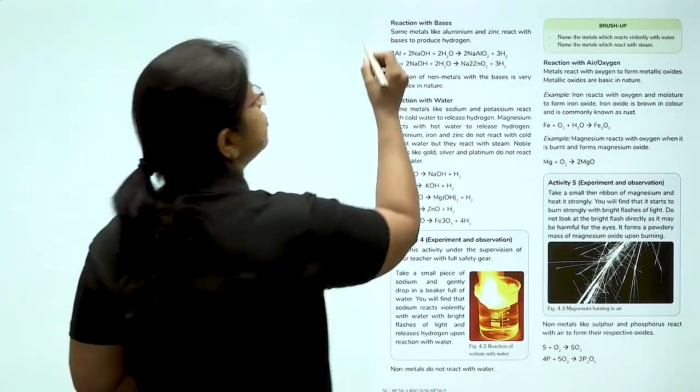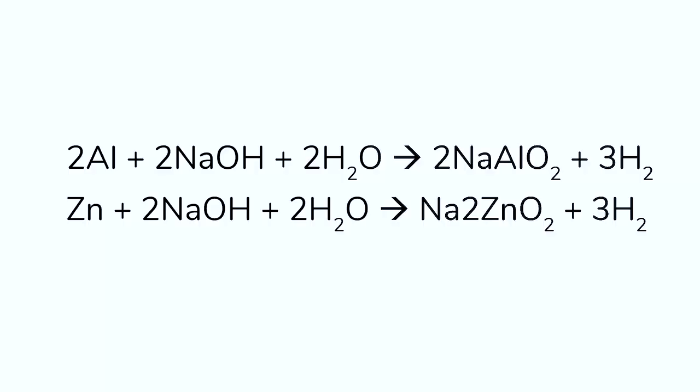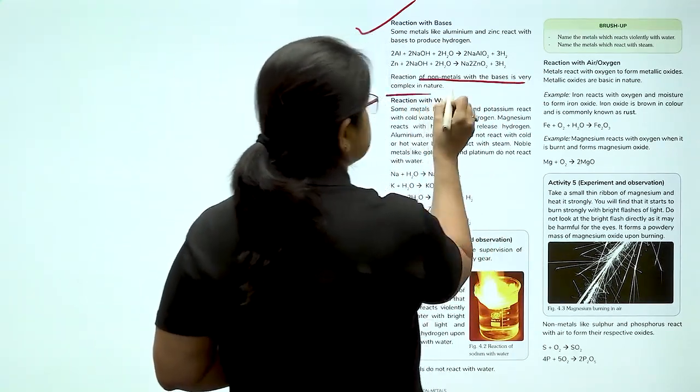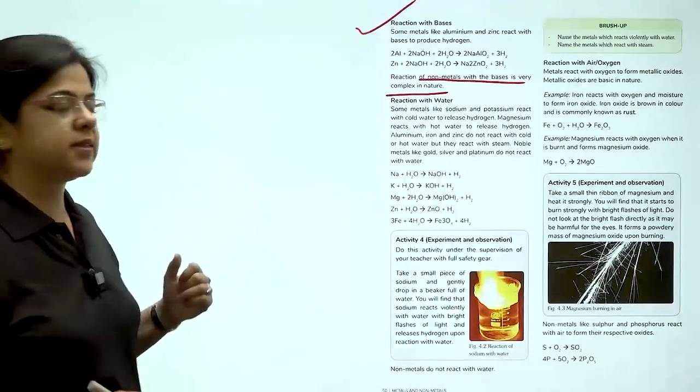Coming next to the reaction with bases. 2Al plus 2NaOH plus 2H2O give 2NaAlO2 plus 3H2. Zn plus 2NaOH plus 2H2O gives Na2ZnO2 plus 3H2. Therefore, we see that metals like aluminium and zinc react with bases to produce hydrogen. The reaction of non-metal with bases is very complex in nature. That is the reason it has not been discussed here.